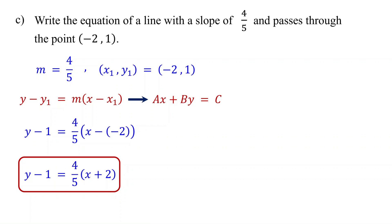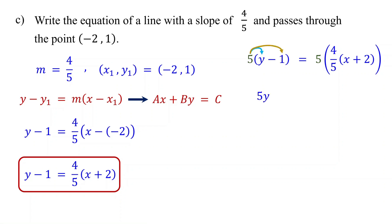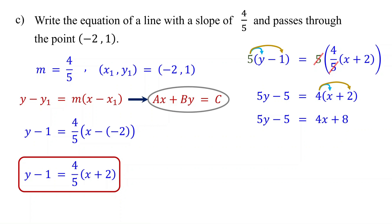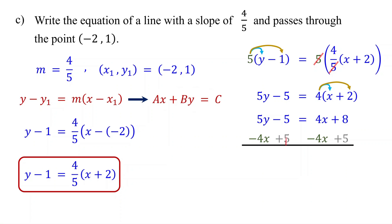To convert to standard form, first eliminate the fraction by multiplying both sides by the denominator. On the left, distribute the 5. On the right, the 5s cancel, leaving 4 times (x plus 2). Now distribute the 4. In standard form, variable terms are on the left and the constant is on the right. So subtract 4x from both sides and add 5 to both sides. On the left, these cancel, leaving negative 4x plus 5y. On the right, these cancel, leaving 8 plus 5, which equals 13.